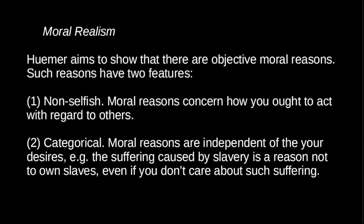Let's look at Huma's argument. First, we need to clarify what exactly is meant by moral realism. There are different forms, but Huma's argument is framed in terms of moral reasons. Moral theories specify reasons for action. For example, the fact that slavery causes suffering, or that slavery deprives people of liberty, are reasons not to own slaves according to most moral theories. A utilitarian would say the fact that slavery causes suffering is a reason not to own slaves. So what Huma is going to argue is that there are objective moral reasons.